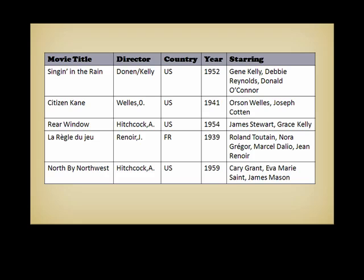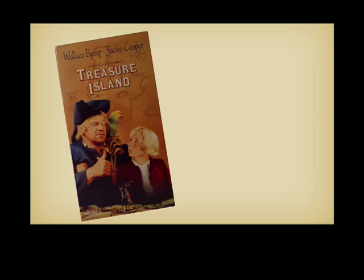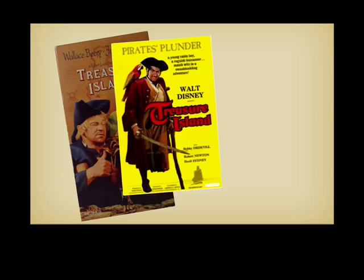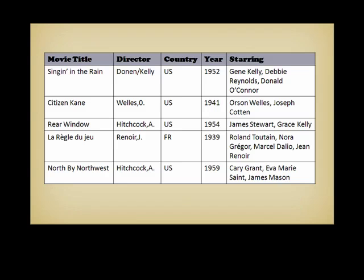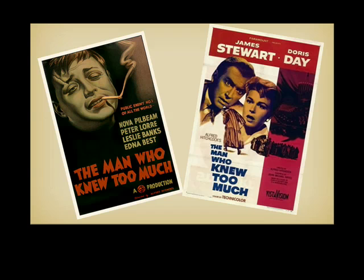What is the smallest subset of characteristics that theoretically identifies a movie? The title? No, the title isn't enough, because you have remakes. For instance, there are several movies based on the Treasure Island novel. Title and director, perhaps. It doesn't work either, because Alfred Hitchcock, for instance, made two The Man Who Knew Too Much — one in 1934 and the other one in 1956.